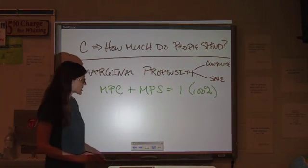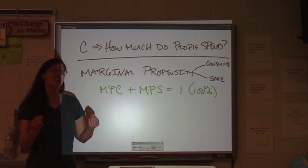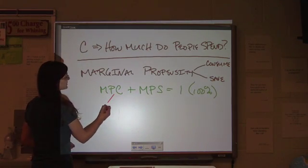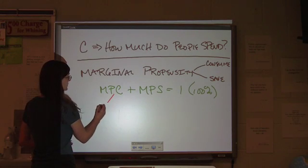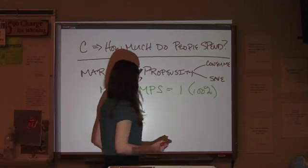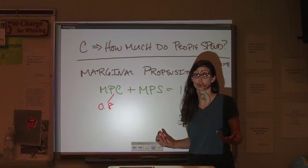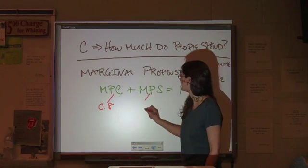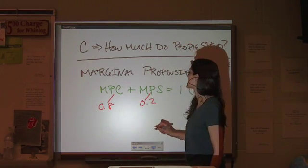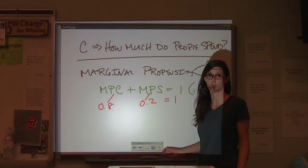Now, for your average consumer, if we're looking at this in terms of what is likely to happen, a marginal propensity to consume of about 0.8 or 80% is pretty typical. That's a number that I've seen on lots of multiple choice questions. And a marginal propensity to save of 0.2 would give you a combination of 1.